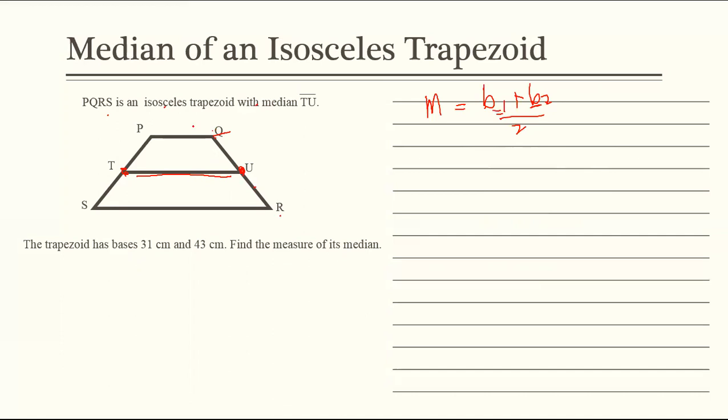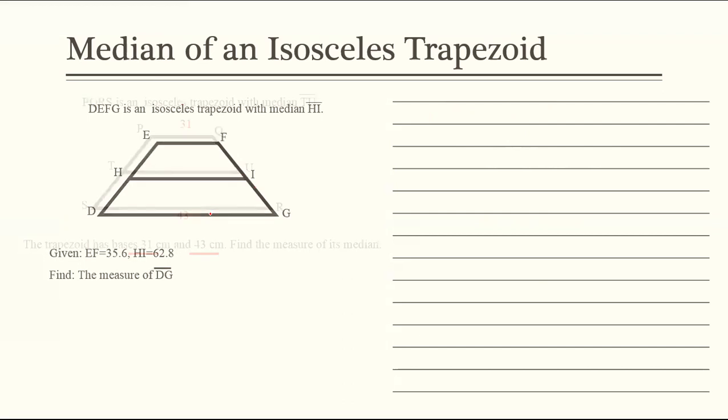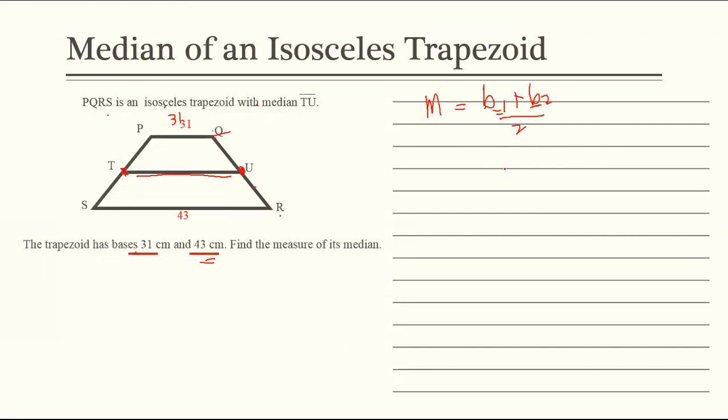So the trapezoid has bases 31 and 43. So 31 to, and 43 po yung baba. Find the measure of its median. So simple lang ang gagawin natin. Add mo lang. 31 plus 43 is equal to 74. Ito yung nasa formula. Then after that, itidivide mo siya by 2. And 74 divided by 2 is 37. So ibig sabihin, the median is 37 units.